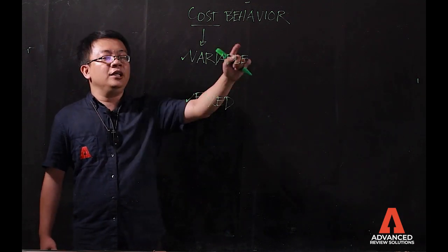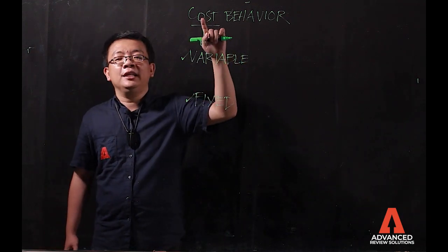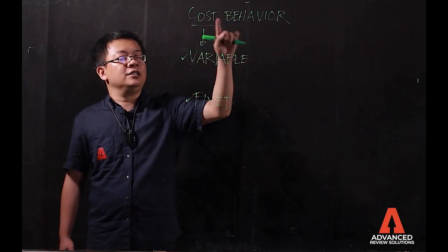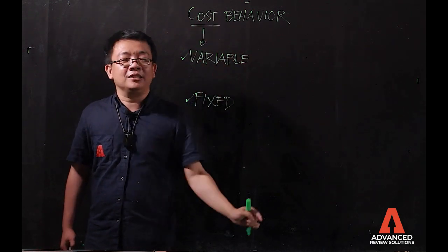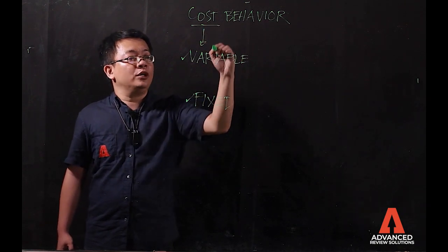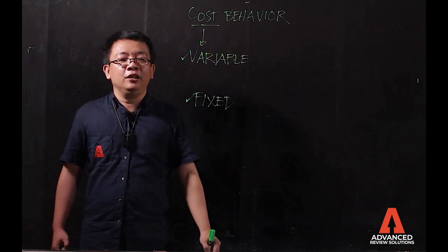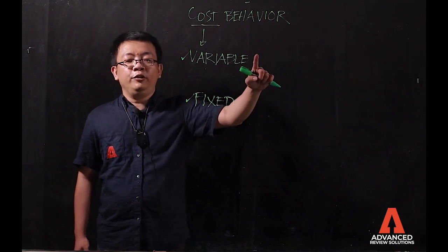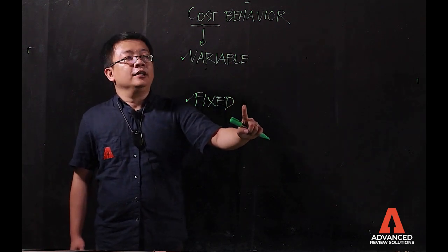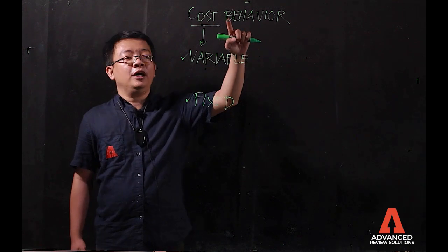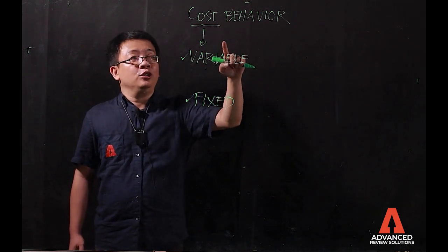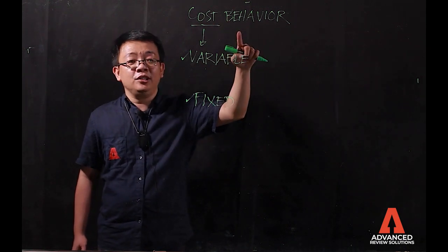The starting point here is basically how you measure the key activities in the company's business. That's why very important is your cost — the variable and your fixed cost. How the cost behavior responds to changes in your activity.